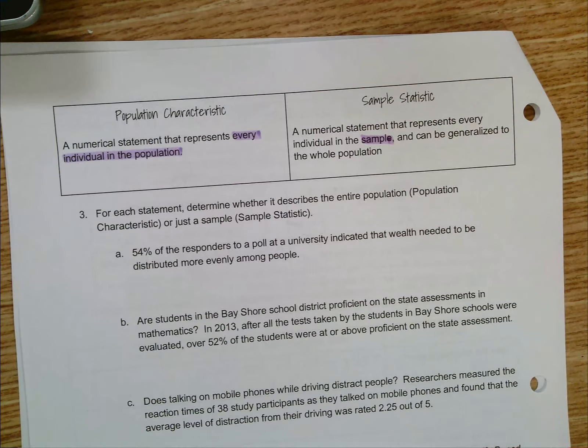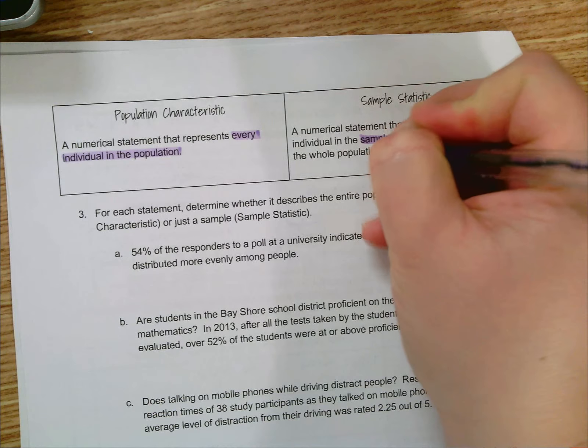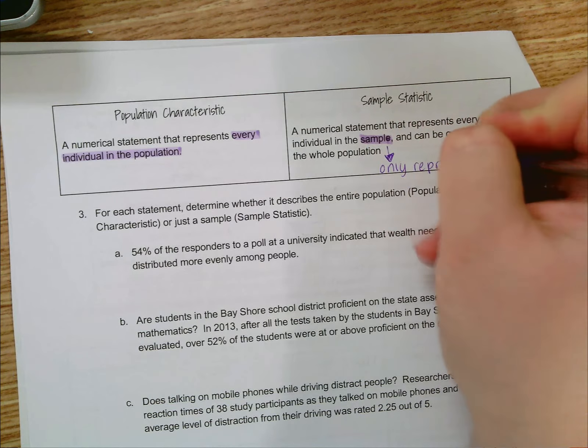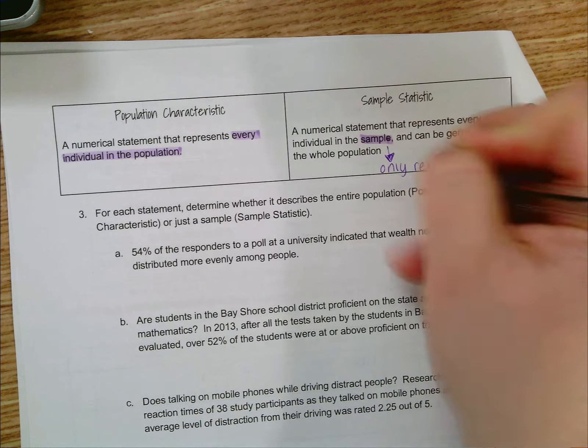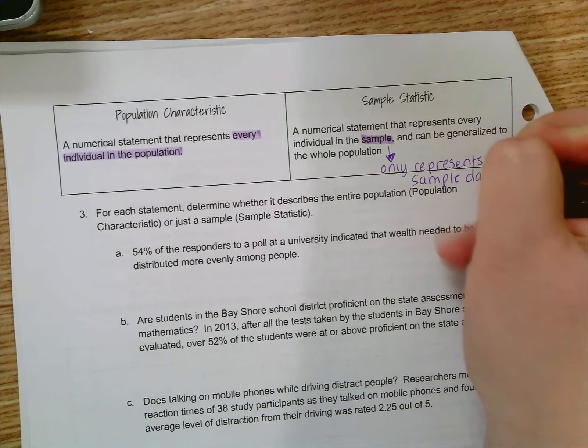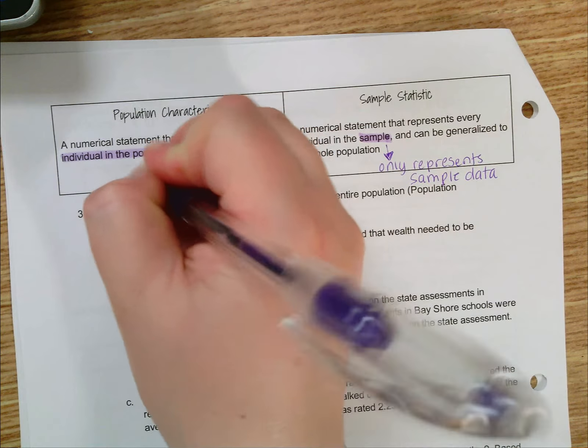The sample statistic is still about the population but only represents the data in the sample, whereas the population characteristic represents everyone. So let's think about this. At the very beginning, I said what if I asked all of my students